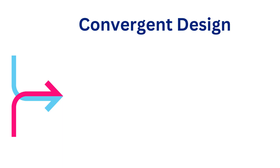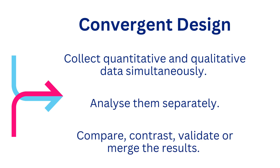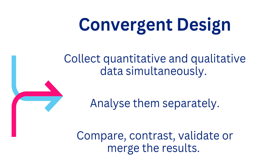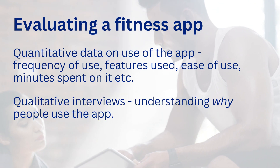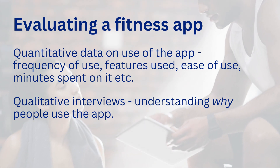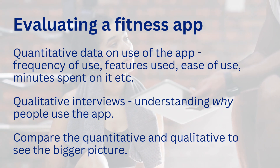Now let's talk about how mixed methods research actually works. There are several ways to go about it, and each one depends on how you want to integrate the quantitative and the qualitative. One of the most common designs is the convergent design, where you collect both quantitative and qualitative data at the same time, then analyse them separately and compare, contrast, validate, or merge the results — it's like bringing together two pieces of a puzzle. For example, you might gather quantitative data on people's use of a fitness app and also conduct interviews to understand why they use the app the way they do, then compare the usage numbers with the qualitative interview data to see the bigger picture.